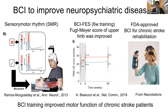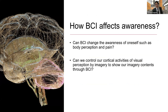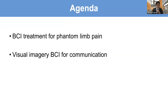This kind of BCI is also a useful tool to improve neuropsychiatric diseases. BCI training has been shown to improve motor function in chronic stroke patients. Today I'd like to discuss how BCI affects our consciousness, addressing two questions: Can BCI change the awareness of ourselves, such as body perception and pain? And can we control cortical activities of visual perception by imagery to show imagery contents for BCI? I have two topics: BCI treatment for phantom limb pain, and visual imagery BCI for communication.